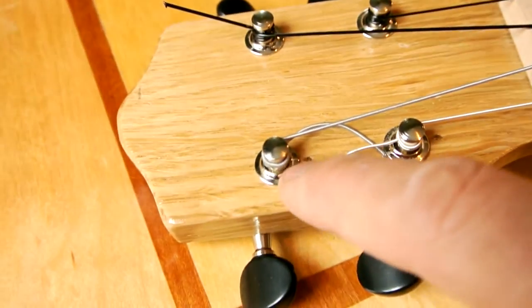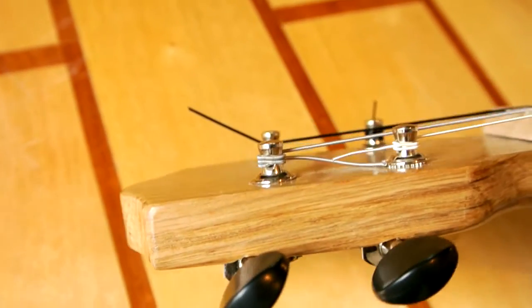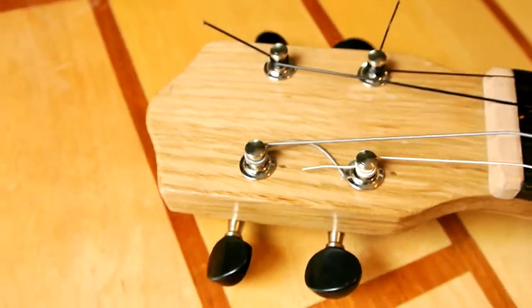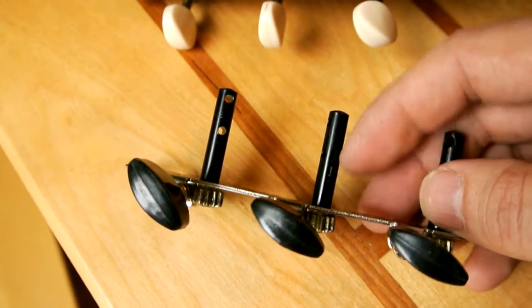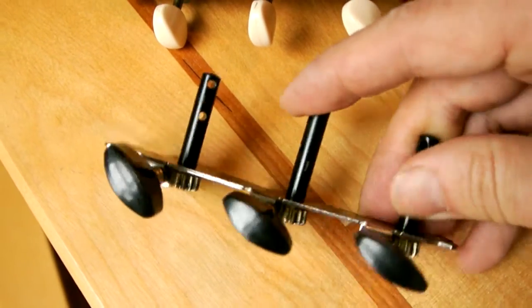On my homemade ukulele, there's bushings around the tuning posts, and that helps offset the tension of the strings. But with these ones, you have a big hole around the post and the string really just kind of levers on here.